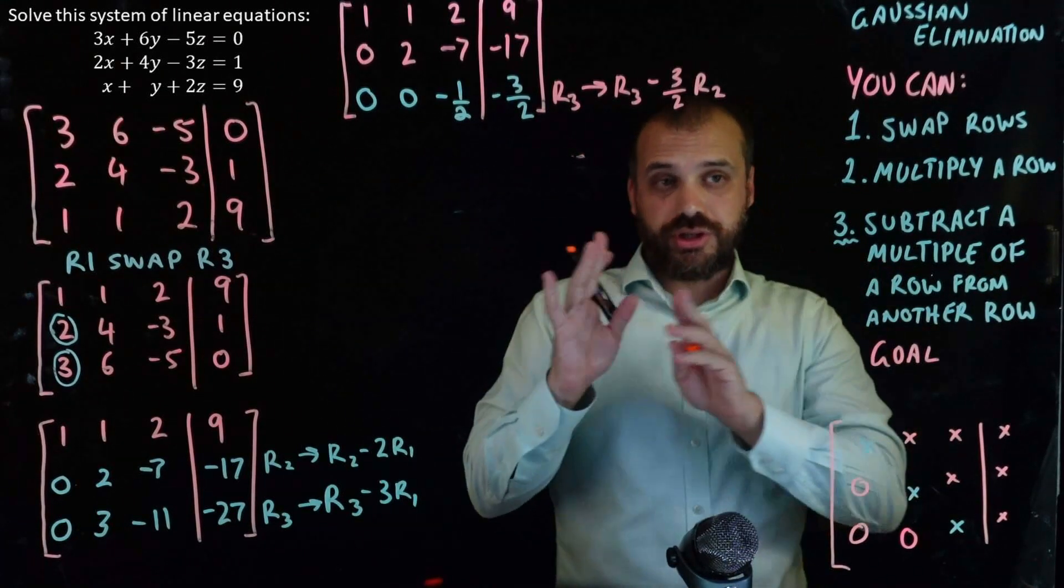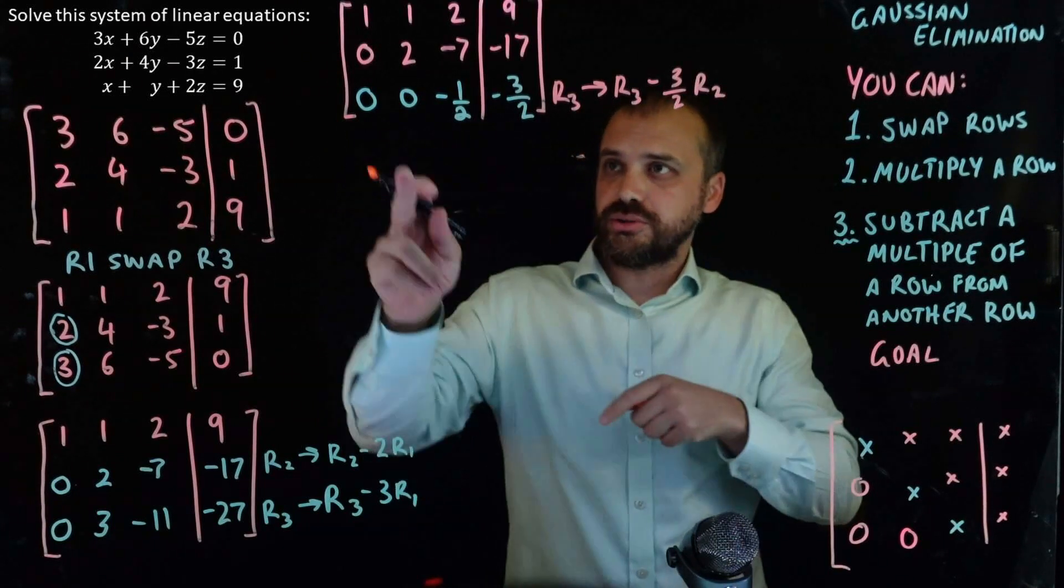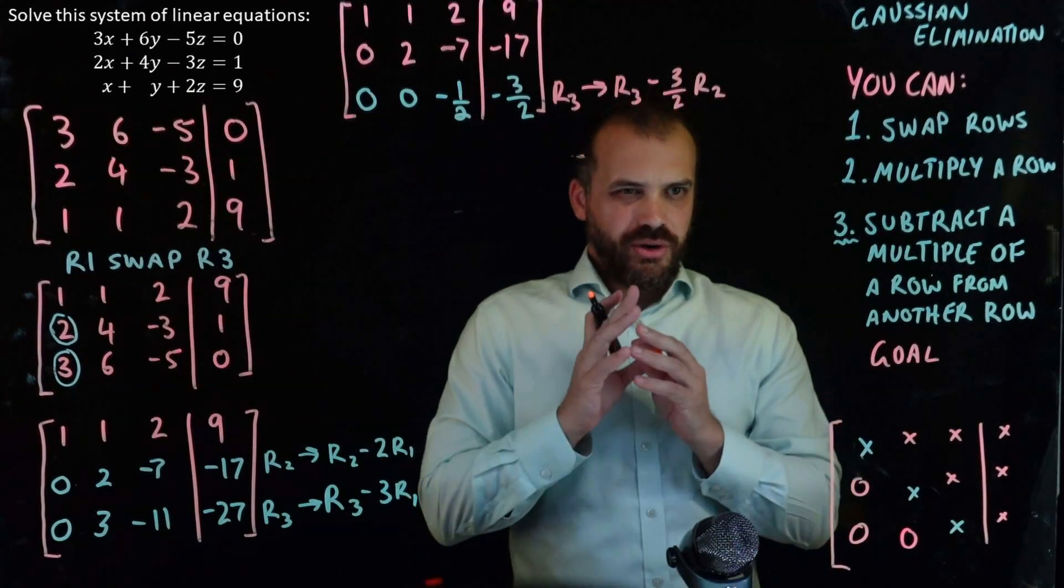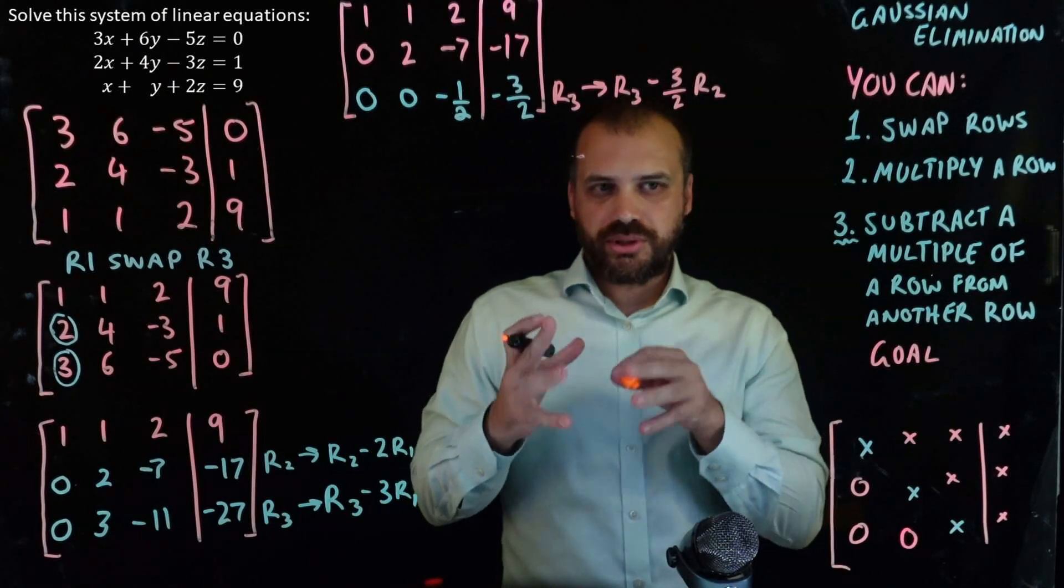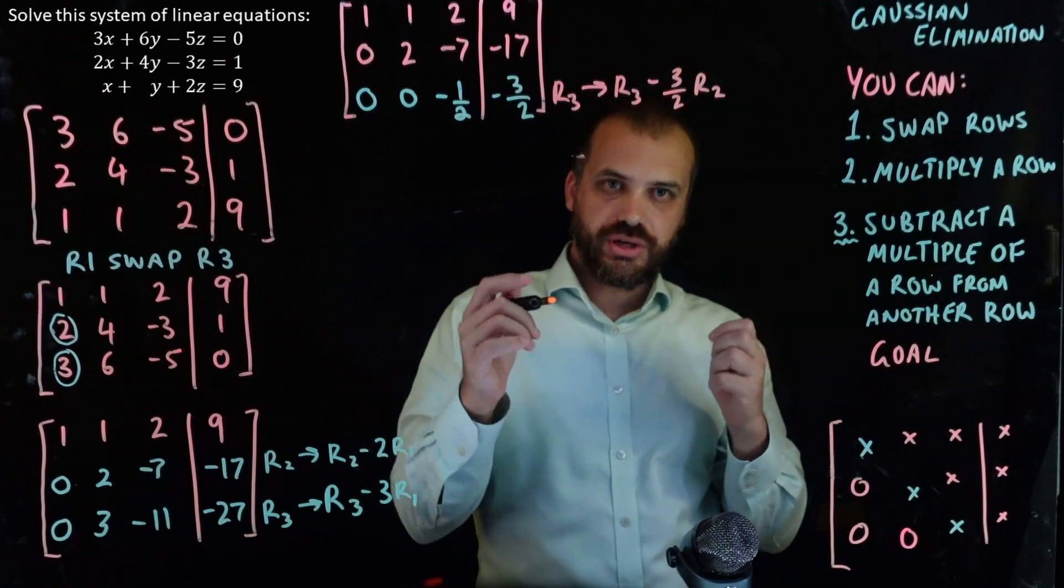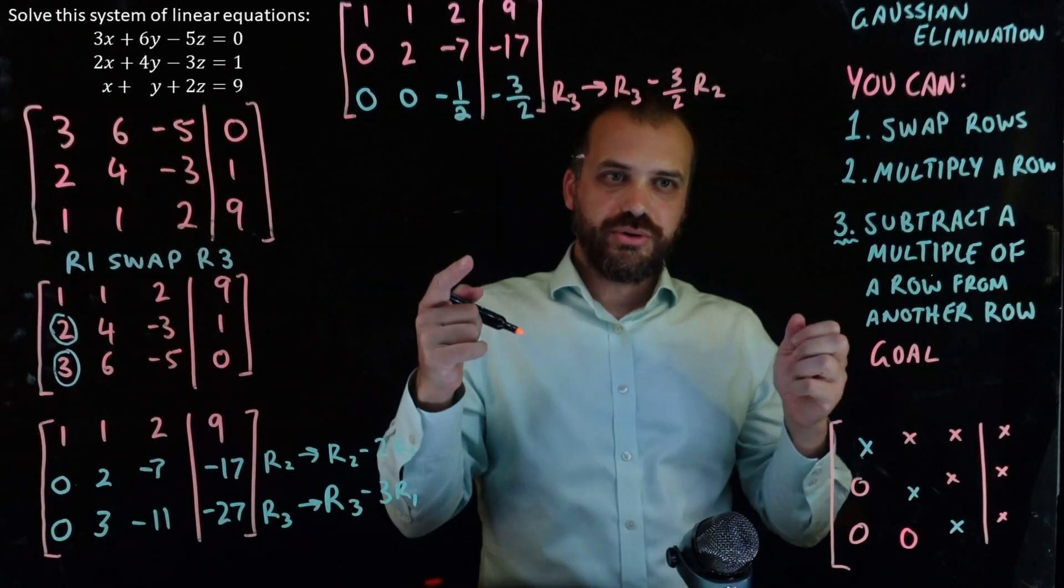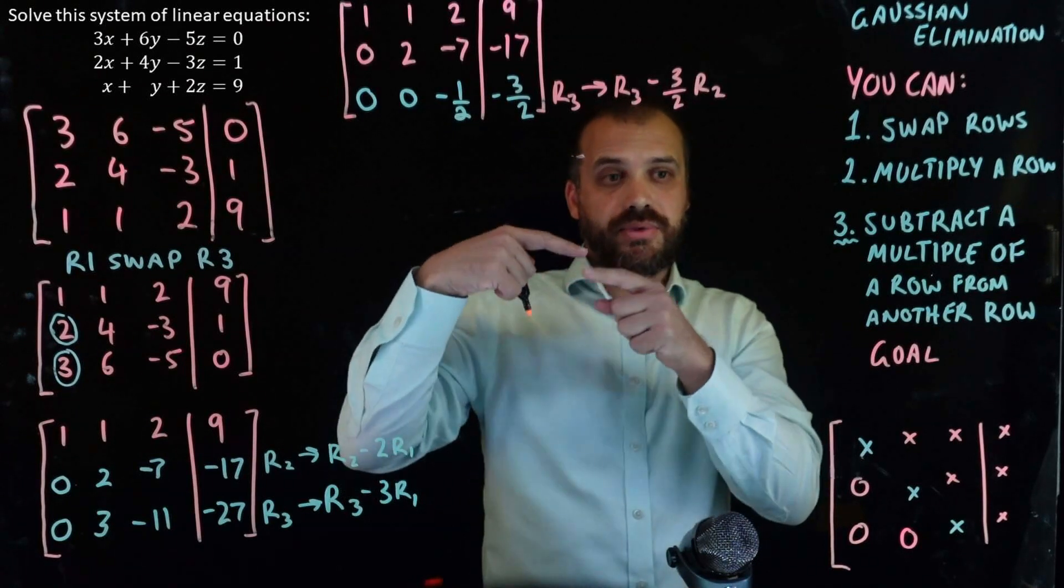But I guess the real lesson here is if you follow these rules, you can do whatever you like as long as you follow all of those rules. Okay, so forgetting about the alternative method for a second, we've got what we've come for. We've reached our goal. This is zero, zero, zero.